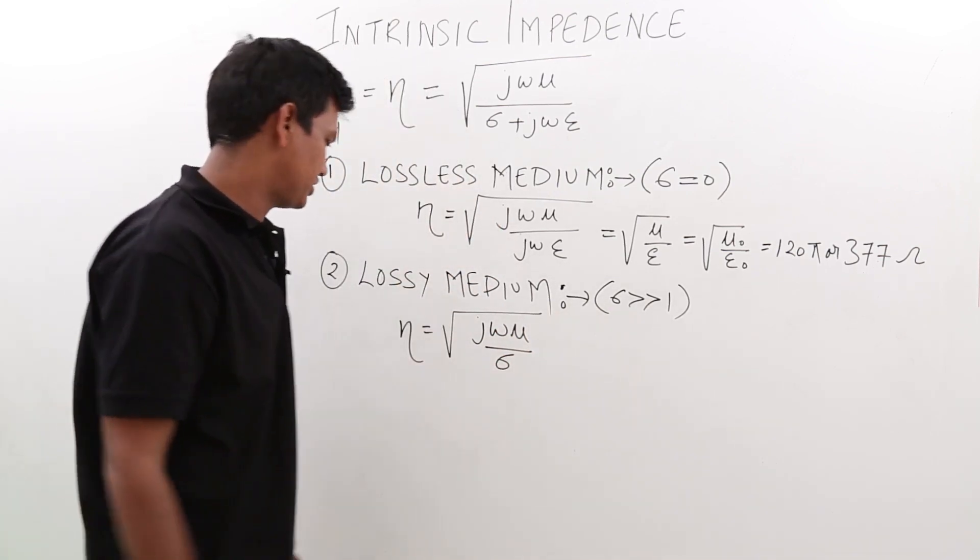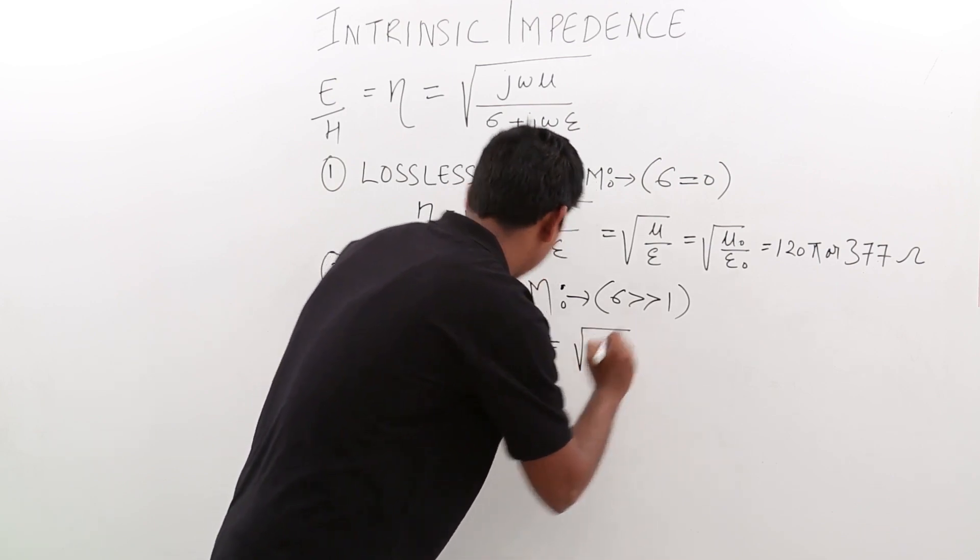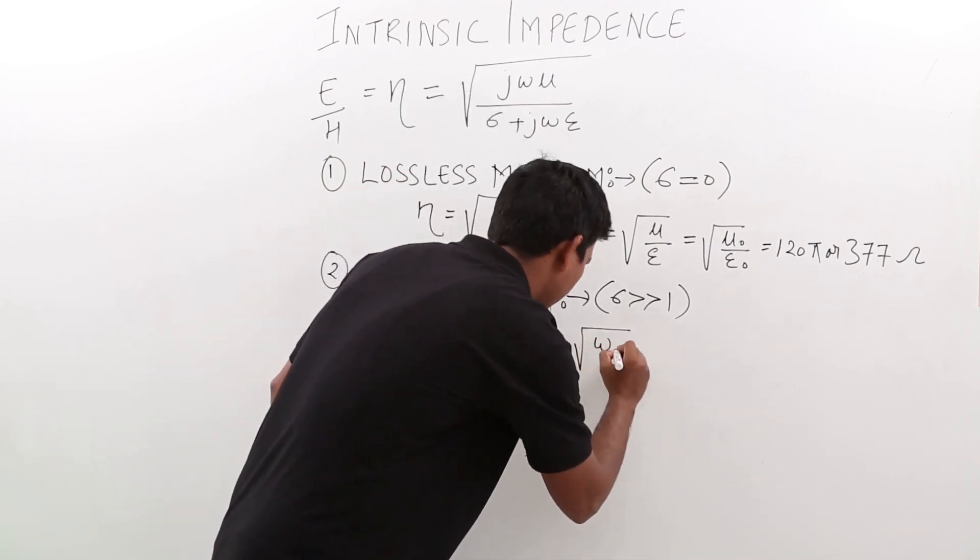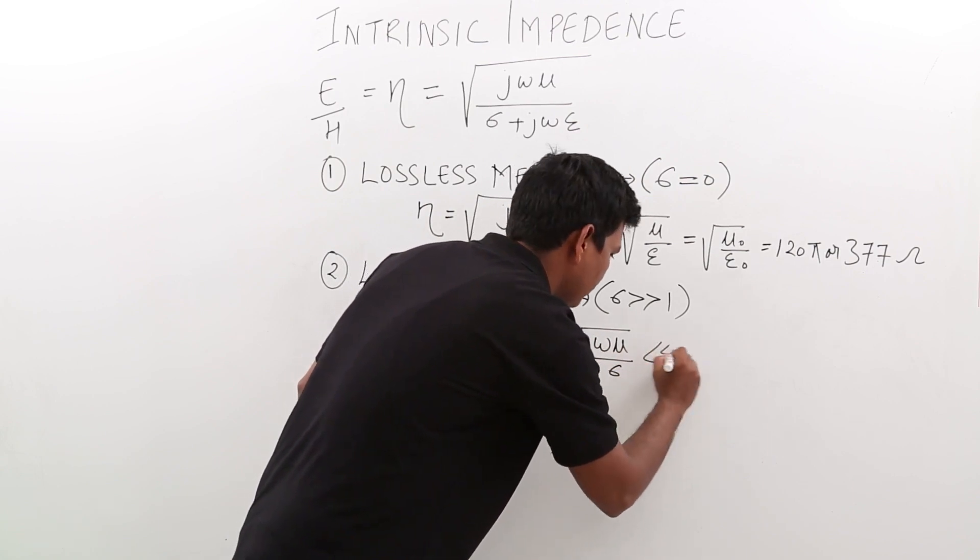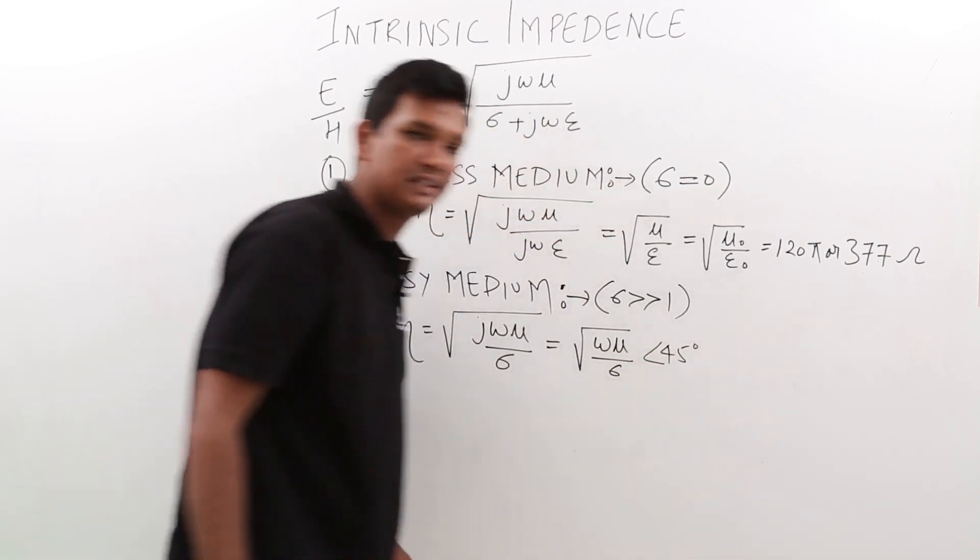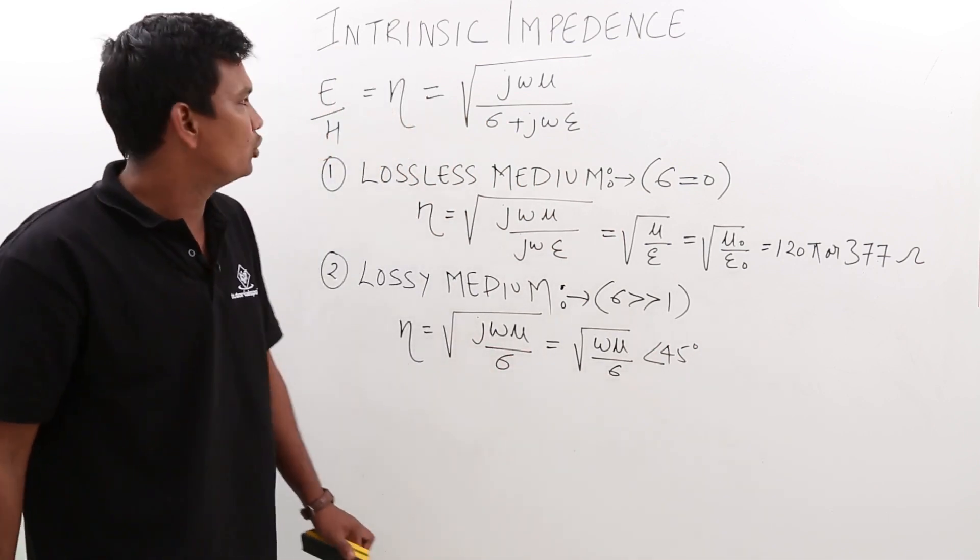Now, if I rearrange this equation, it would be omega mu by sigma at an angle of 45 degrees. As this is an impedance, you can see it is at an angle of 45 degrees.